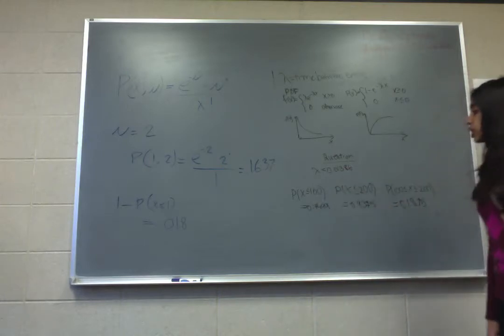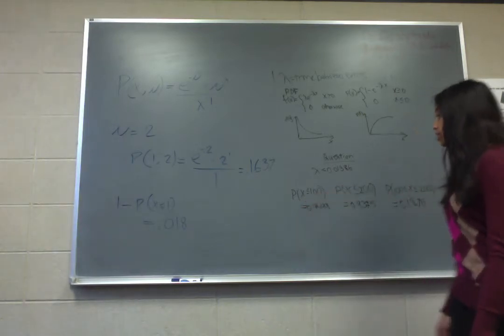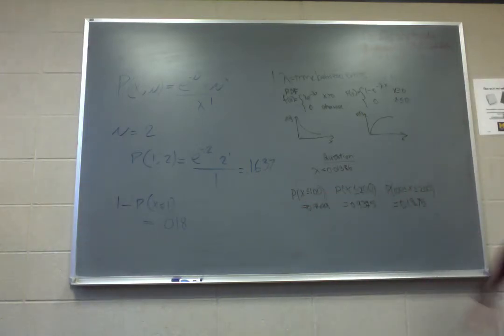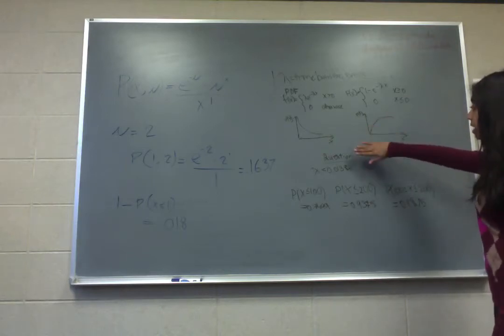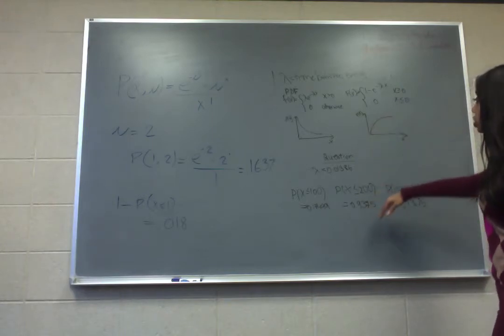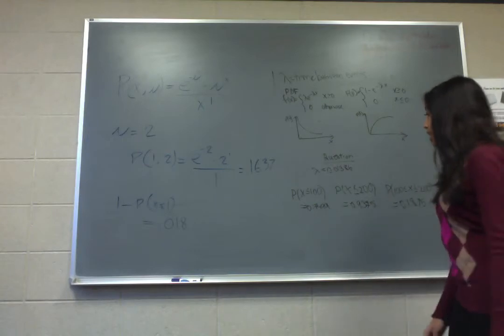The question asks you to find the probability that x is less than or equal to 100. To do this, you look at the CDF, because the CDF gives you the less than or equal to function. You substitute lambda and x into here, and you get the value 0.7499.